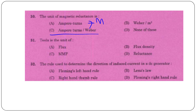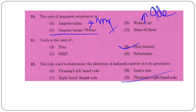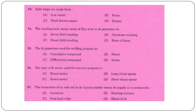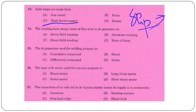Reluctance unit is ampere-turns per Weber. Flux density unit is Weber per m² (Tesla). Tesla is Weber per meter square. The rule used to determine the direction of induced current in a DC generator is Fleming's right-hand rule; for a motor it is the left-hand rule. Split rings are made from hard-drawn copper. Slip rings are made from phosphor bronze.